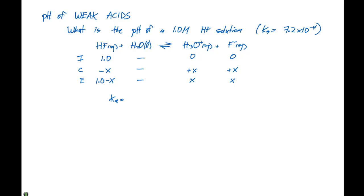If we set up our Ka expression, it's going to be the concentration of H3O plus times the concentration of F minus divided by the concentration of HF. This is going to equal 7.2 times 10 to the minus 4. If we now plug in our equilibrium concentrations, we're going to have X times X divided by 1.0 minus X equals 7.2 times 10 to the minus 4.